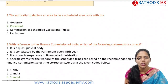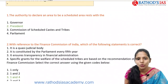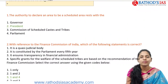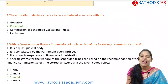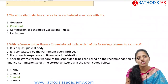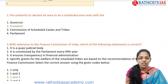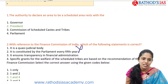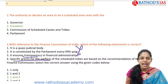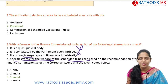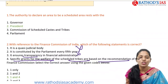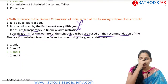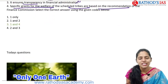For yesterday's questions: the authority to declare an area to be a scheduled area rests with the President, not the Governor. Regarding the Finance Commission of India — it is a quasi-judicial body, constituted by the President every five years (not by Parliament). Specific grants for welfare of Scheduled Tribes are based on recommendations of the Finance Commission, so the correct answer is option three combining statements one and four.